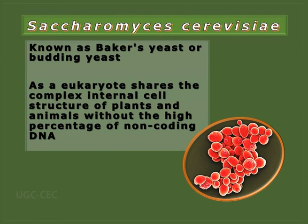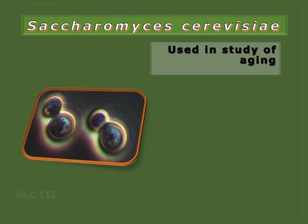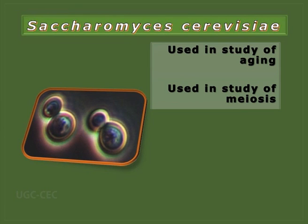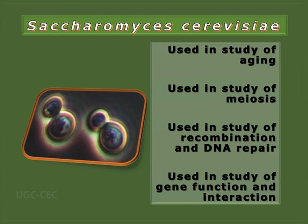As a eukaryote, Saccharomyces cerevisiae shares all structures present in plants and animals, and has a high percentage of coding DNA — non-coding DNA is largely absent, which is advantageous compared to other eukaryotes. It is a strong economic driver with established use in industry for overproduction of many metabolic compounds. It is used to study ageing, meiosis, recombination, and DNA repair mechanisms.